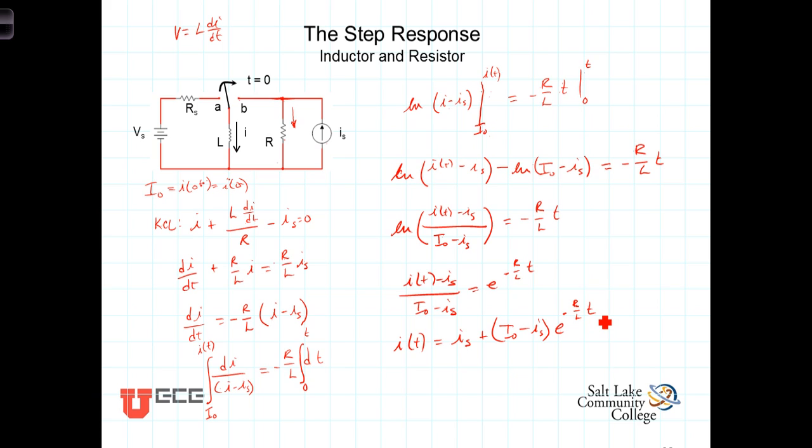Once again, we're going to take this constant and write it in a form so that we can have a tau defined, where tau is equal to L over R, and this then becomes, noting a couple of other things.